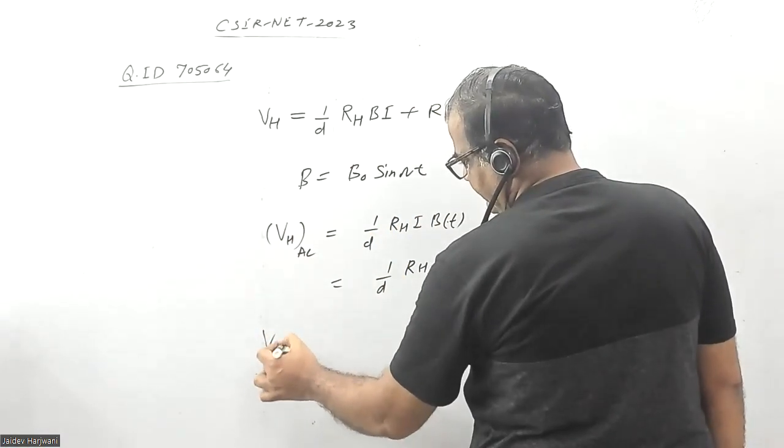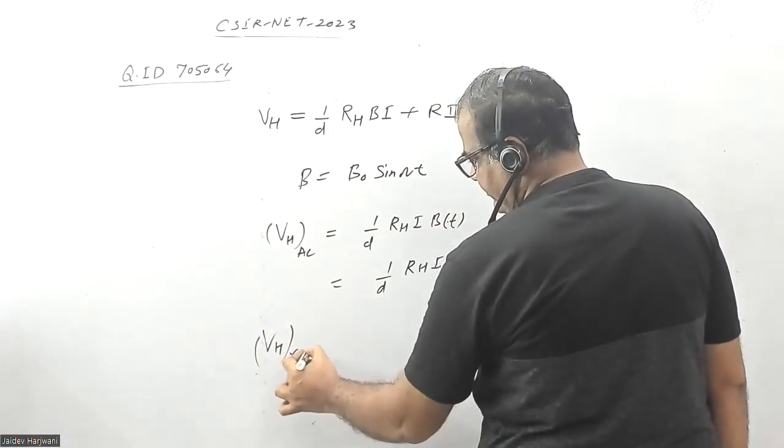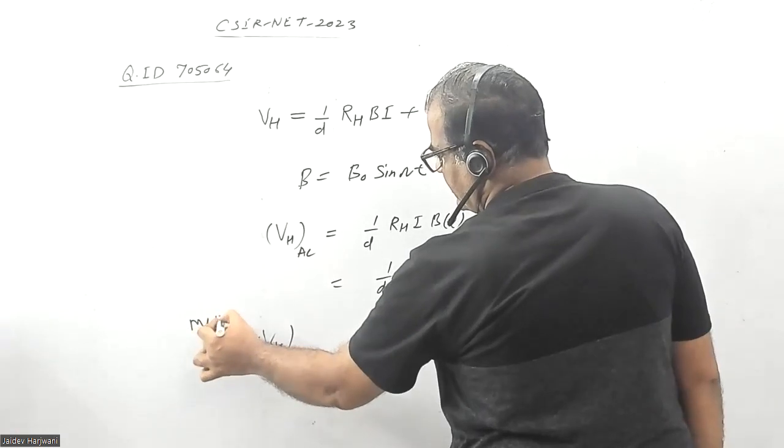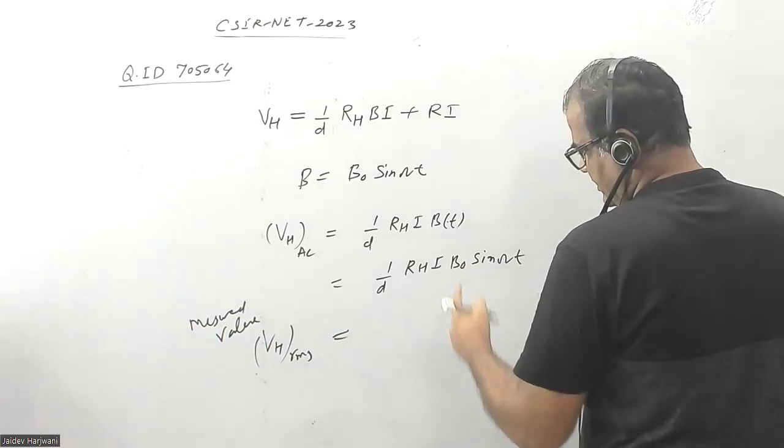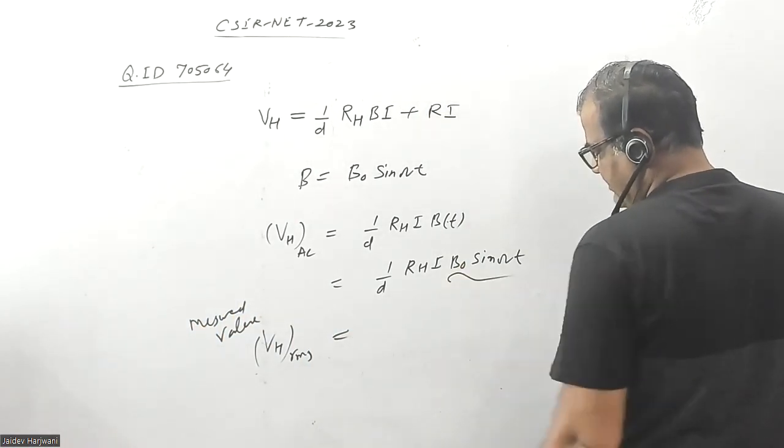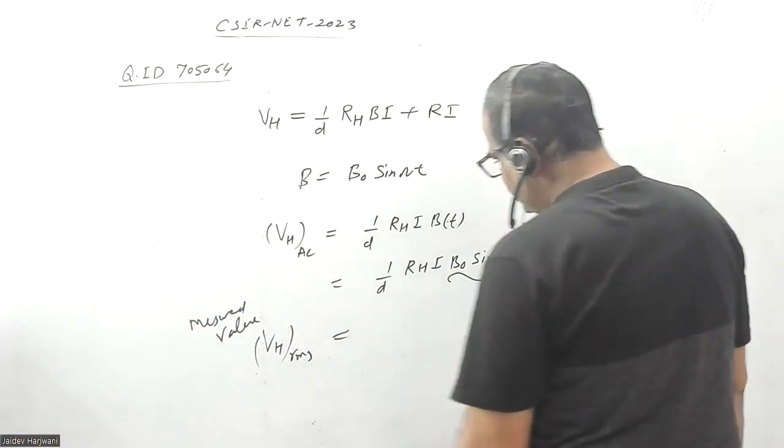The RMS value, if you take it, you know the RMS value for a sinusoidal signal is the amplitude divided by root 2.